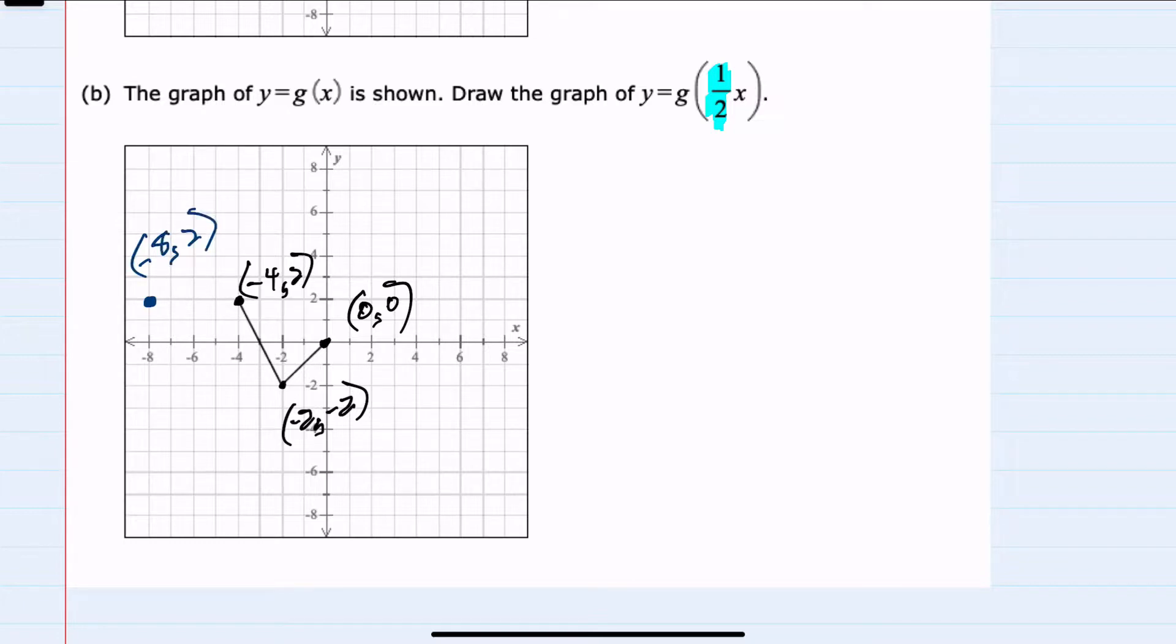For the point on the bottom, I can see that when I put in negative 2, the result is negative 2. But since I'm going to be taking half of it, then negative 4, when I take half of it, would give me the same output. So this would be negative 4, negative 2.